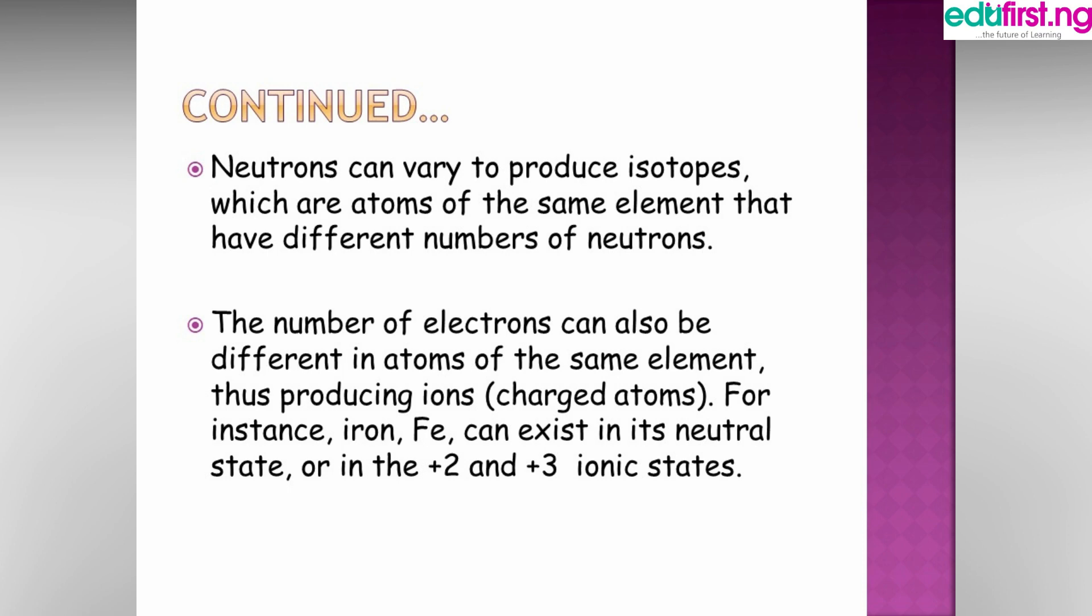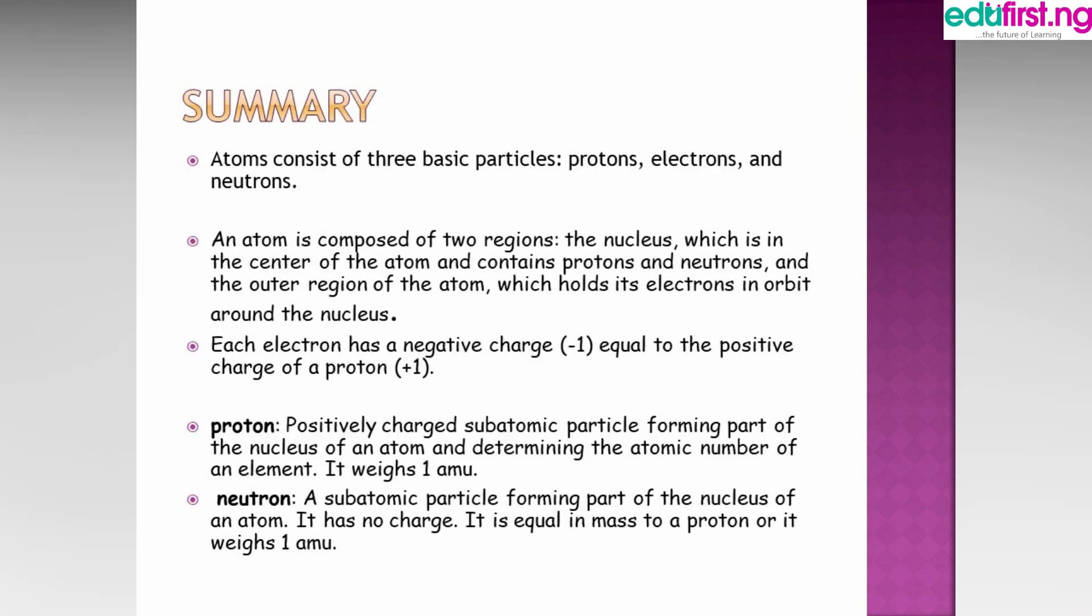That also will be taught when you go further in the institution. To crown everything, summary: atom consists of three particles - proton, electron, and neutron. And an atom is composed of two regions: the nucleus which is in the center of the atom and contains protons and neutrons, and the outer region of the atom that looks like a shell which holds its electrons in orbits around the nucleus. Those shells have their own configurations.